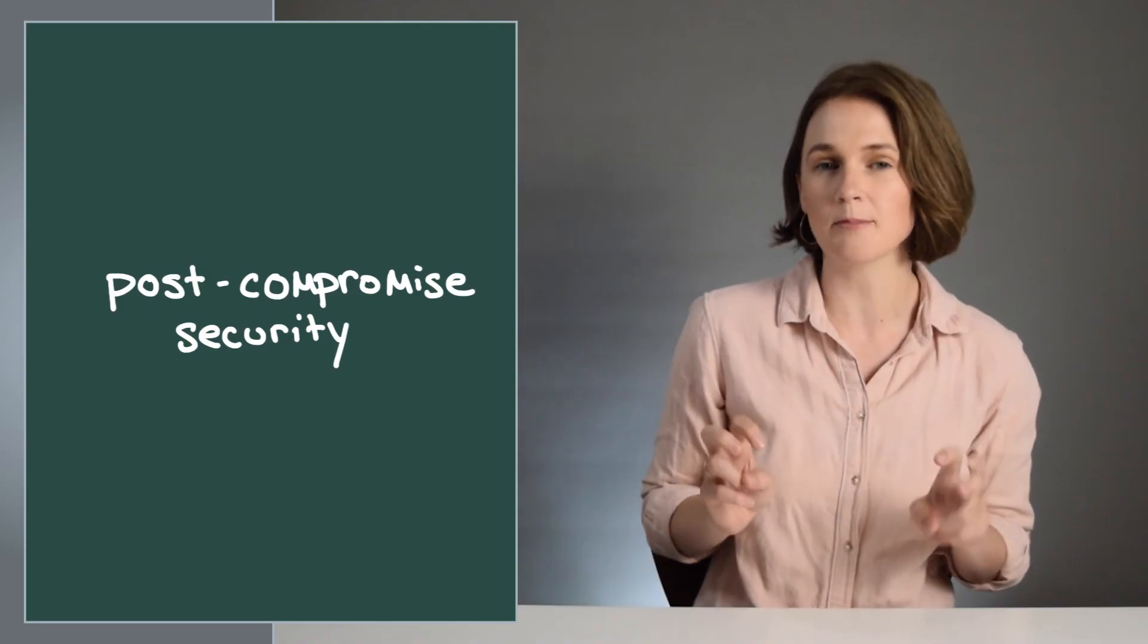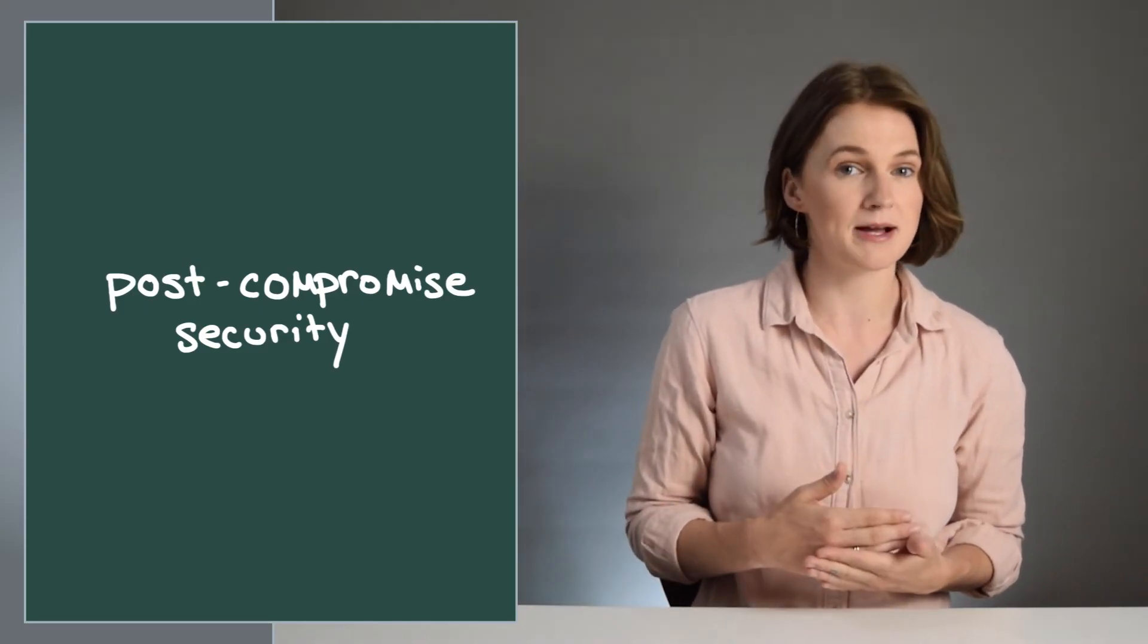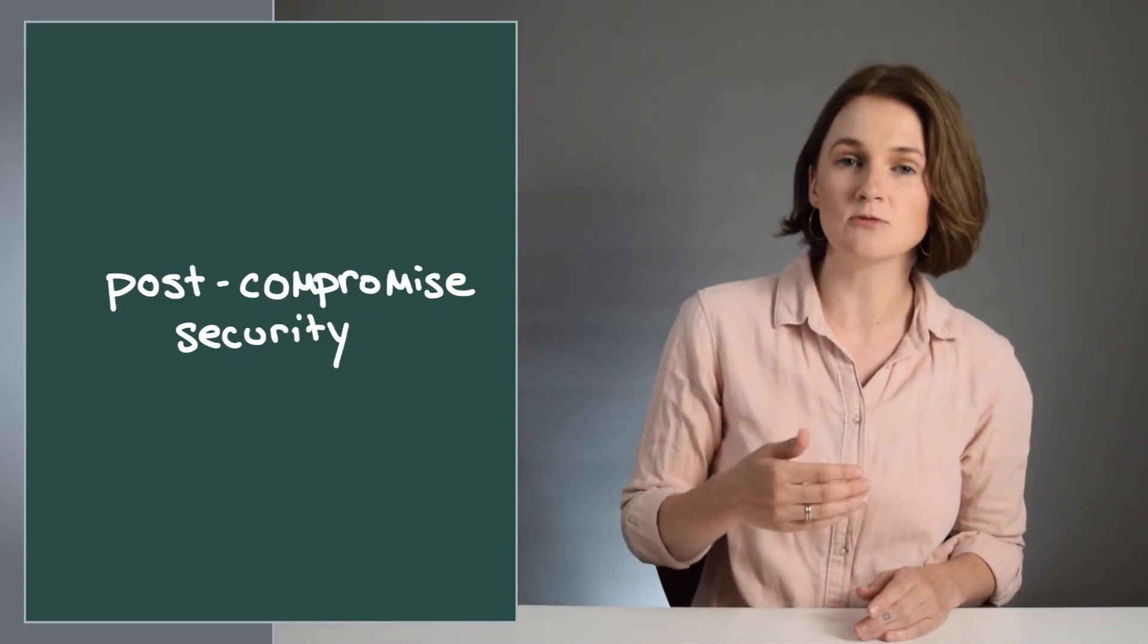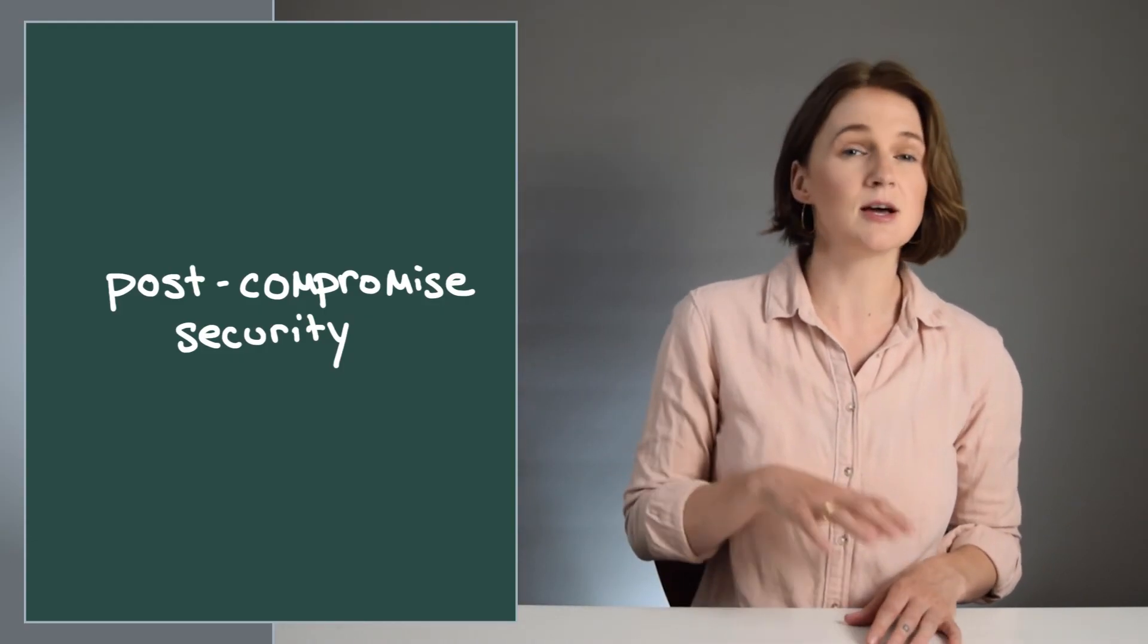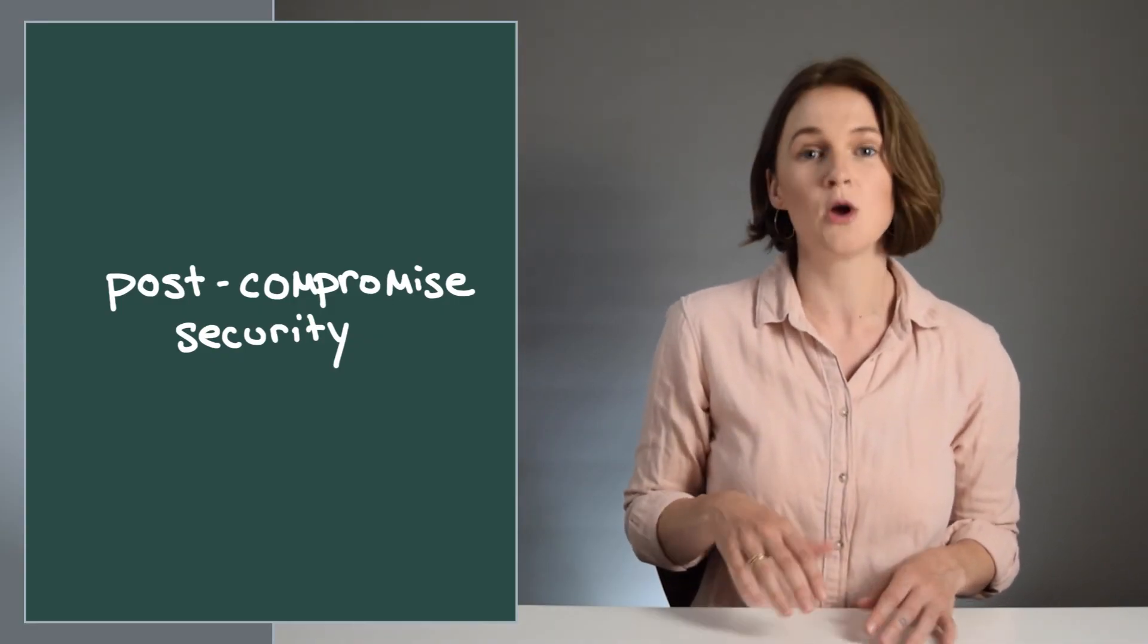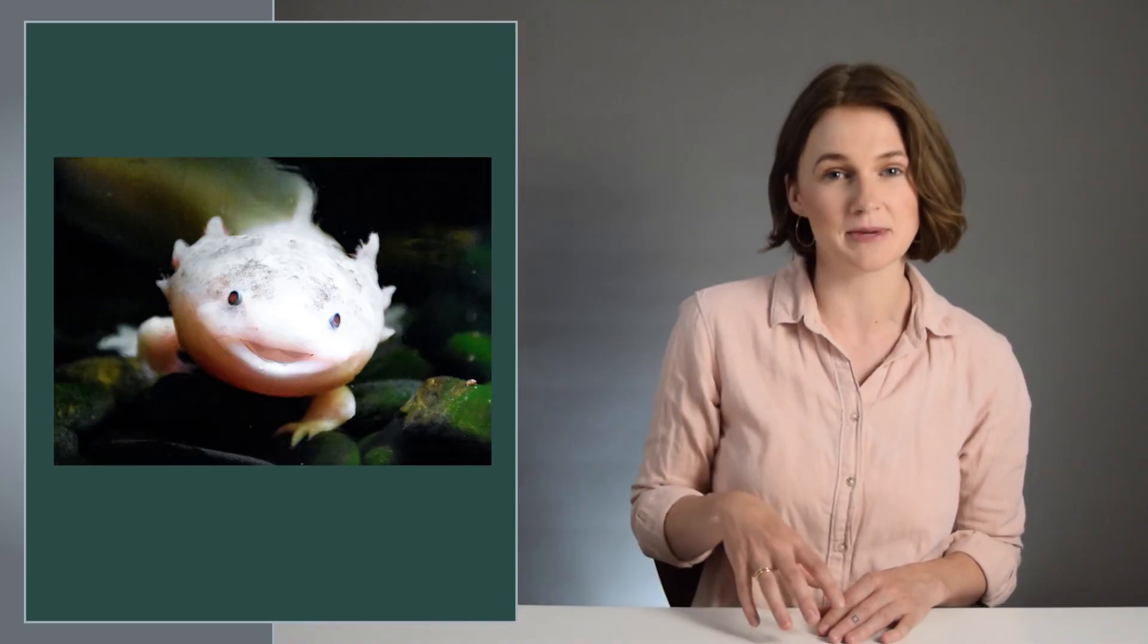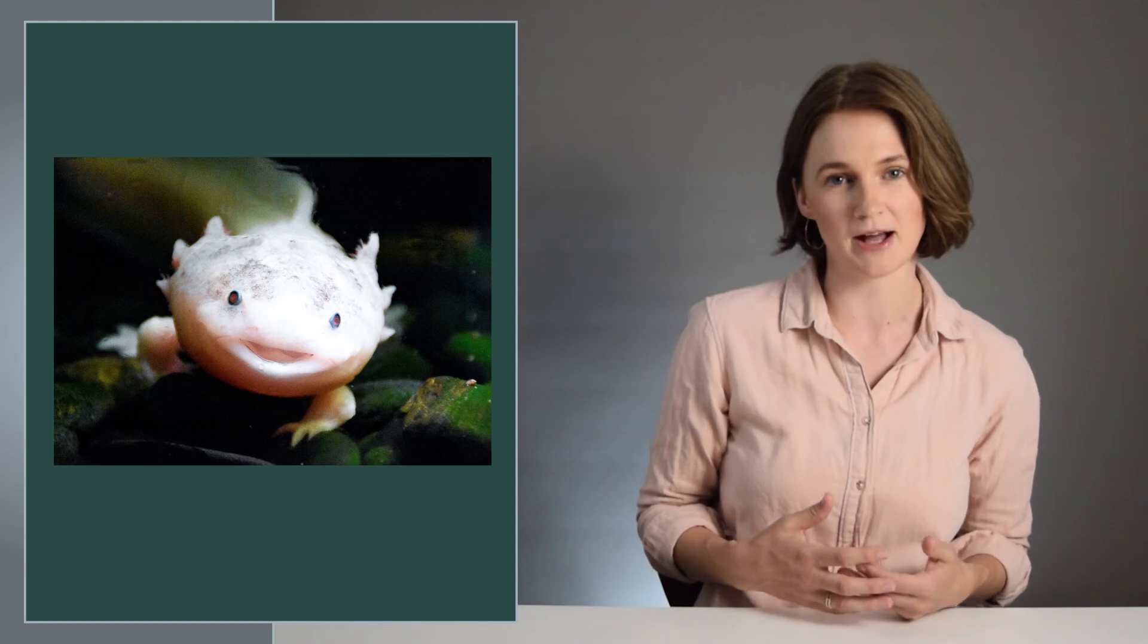This property, enabled by the Diffie-Hellman ping pong of numbers, is known as break-in recovery or post-compromise security. Even if the message thread is compromised, they can eventually regain security to kick out an attacker. In fact, the double ratchet algorithm was originally called the axolotl ratchet, referring to the axolotl salamander, which has self-healing properties. They can regenerate parts of their body.